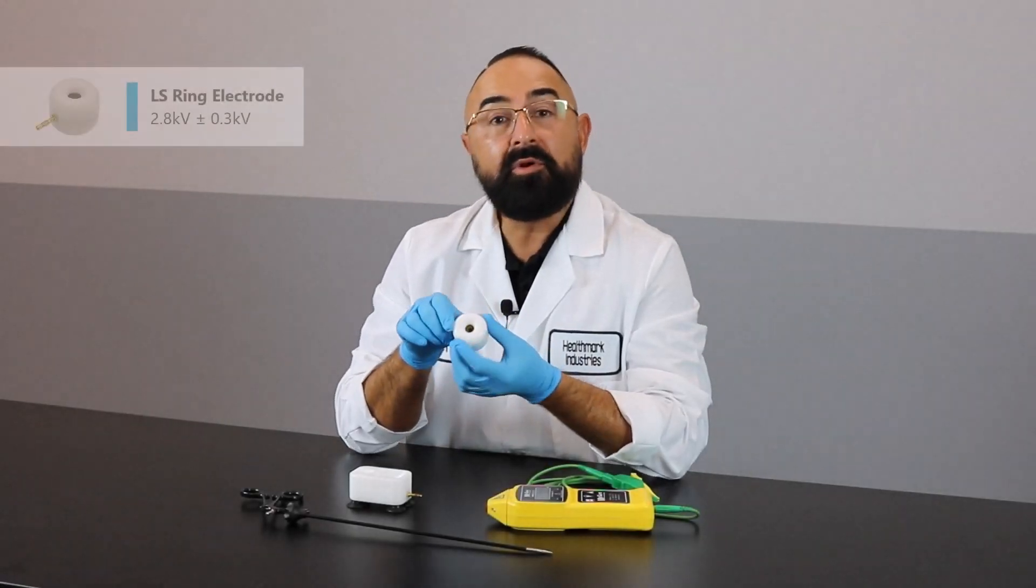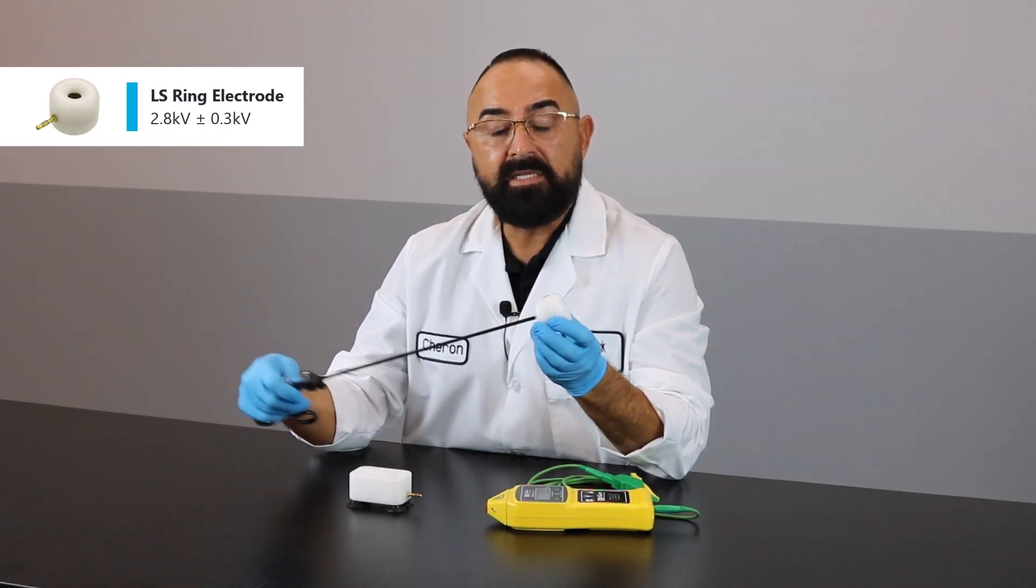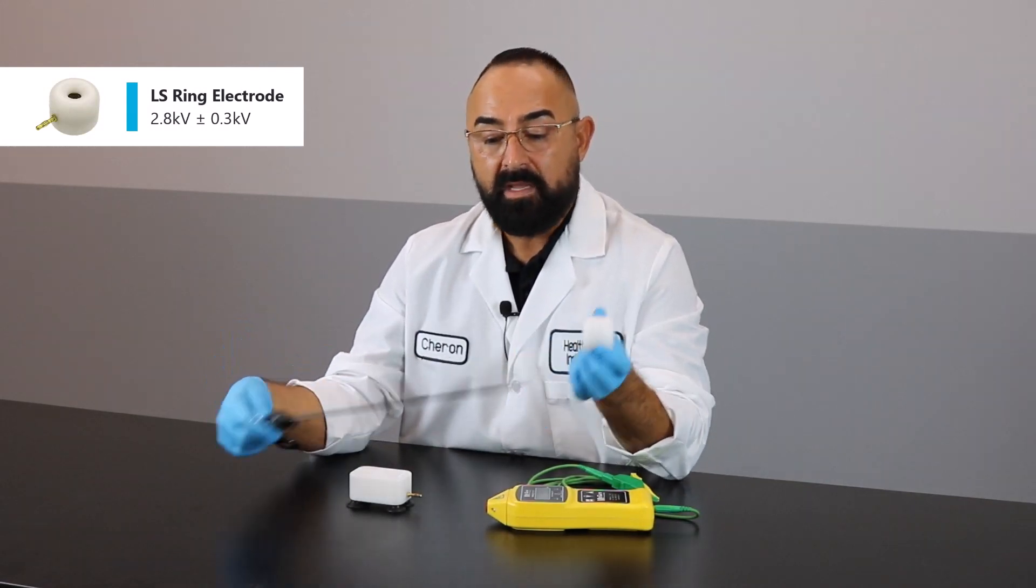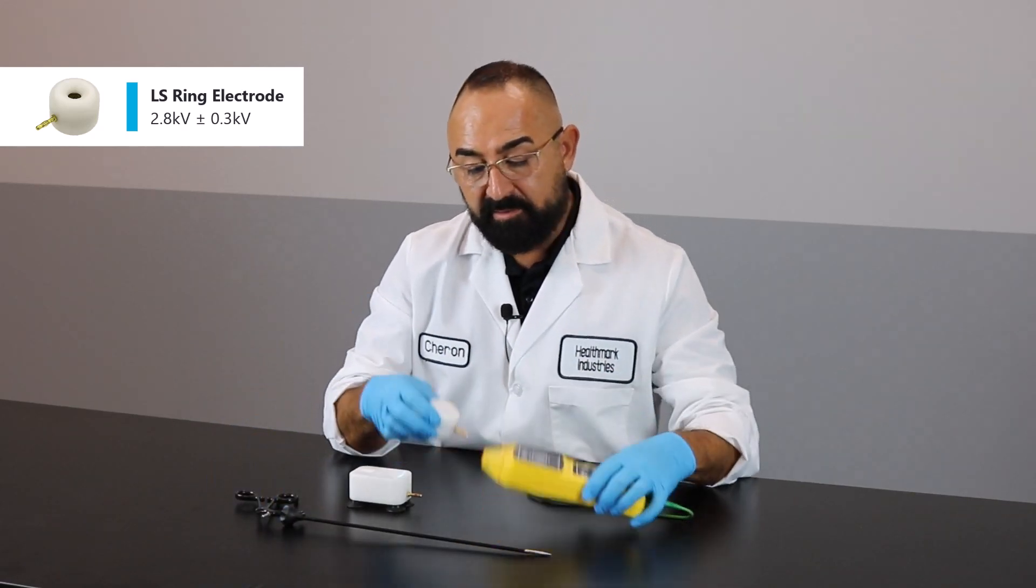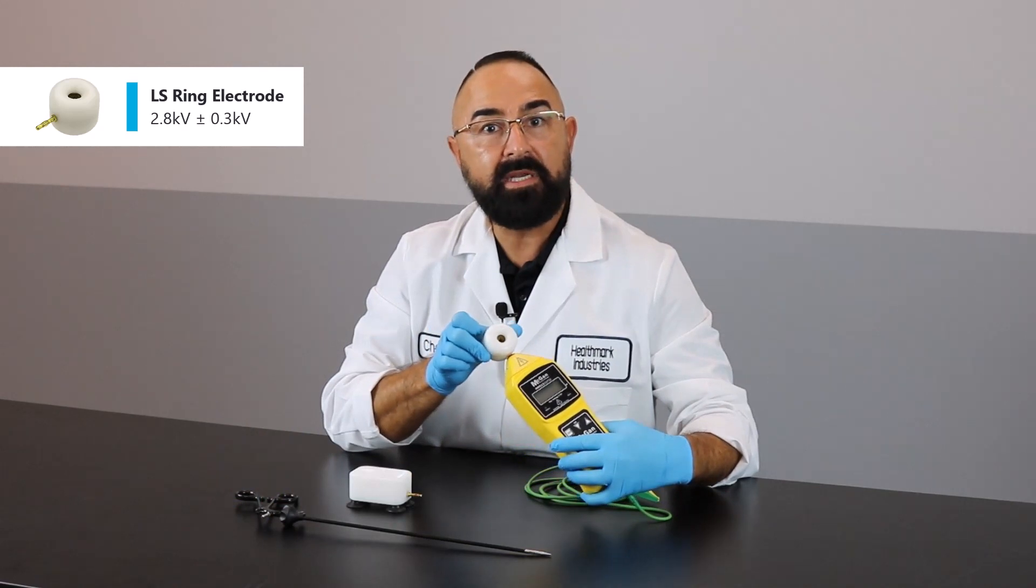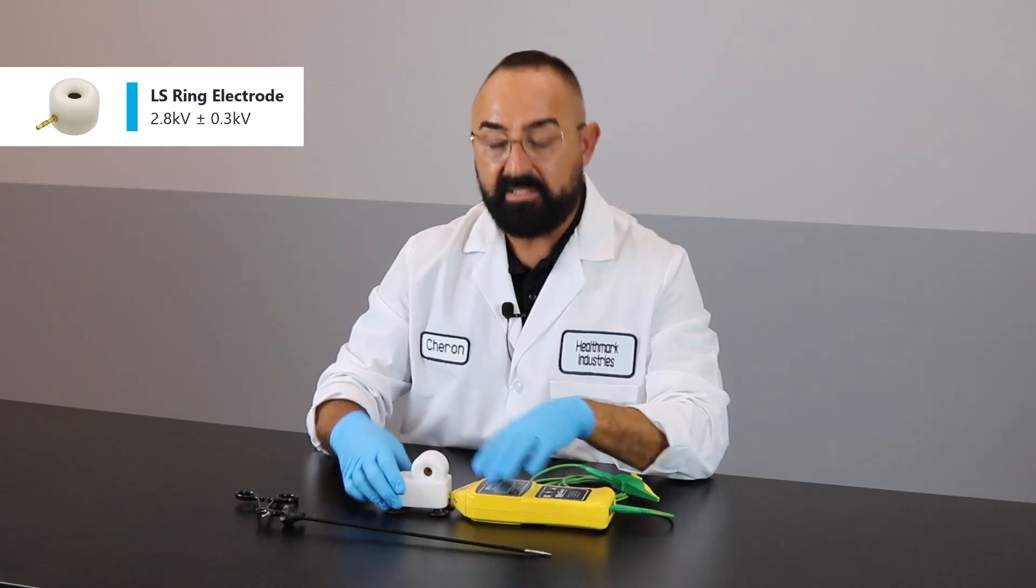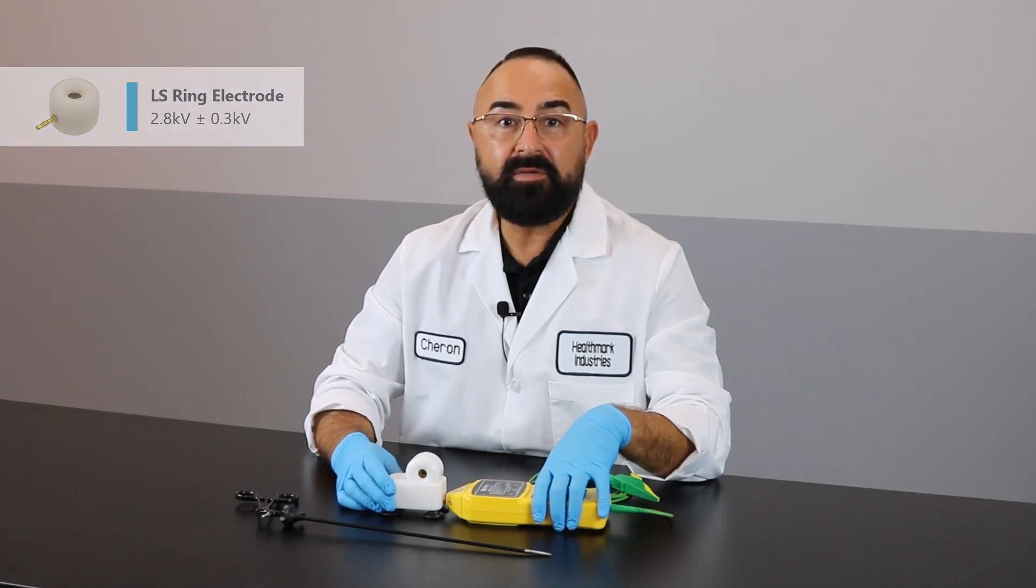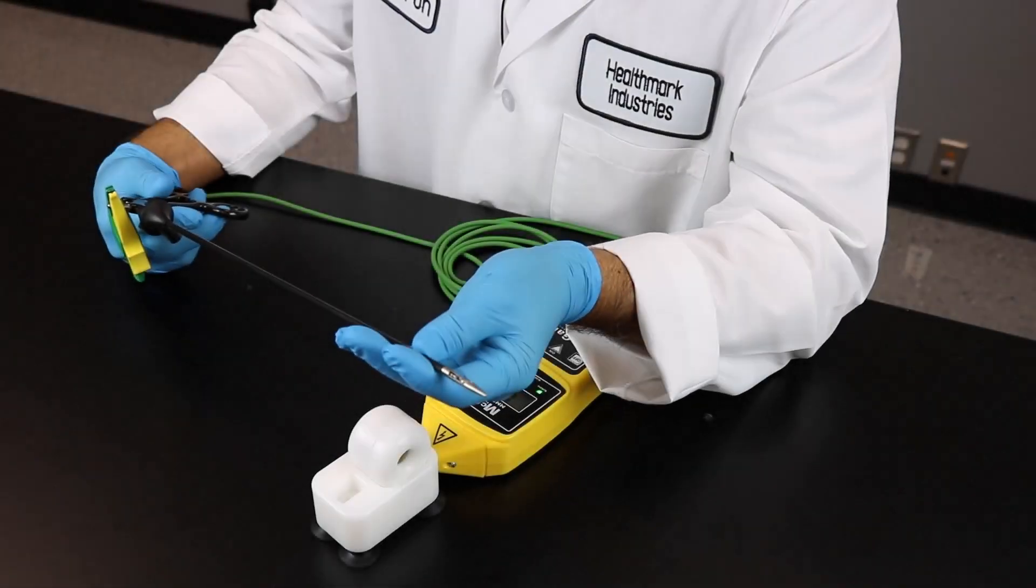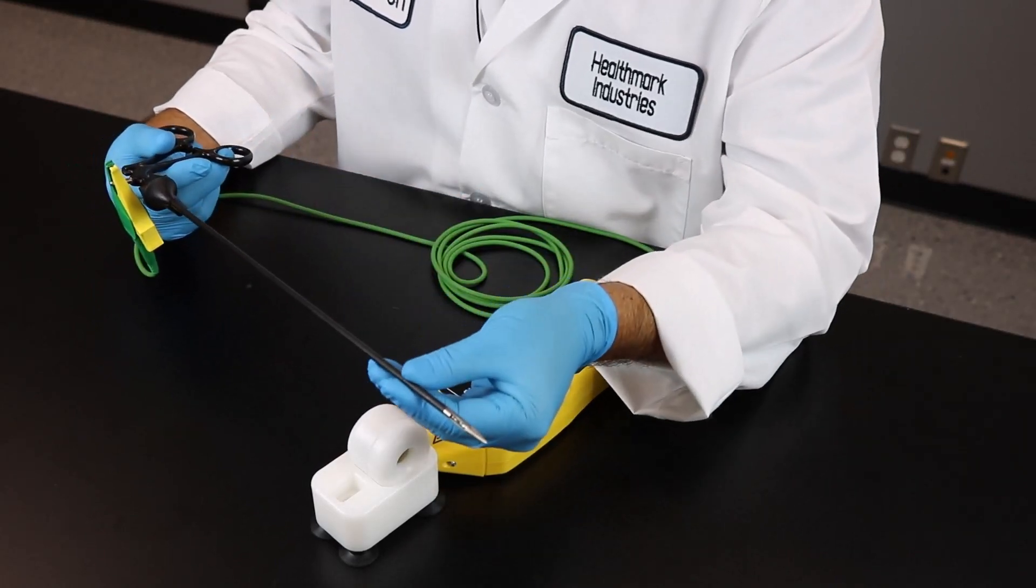The first accessory we're going to address is called the LS ring. The LS ring is used for laparoscopic instrumentation like you see here. There's two ways that you can set this up. The LS ring accessory can attach right to the base unit or ideally to the saddle block. For two different reasons: one, it's less cumbersome when you're testing and for safety reasons as well. A good laparoscopic instrument will not alarm between distal and proximal end of the insulated shaft.